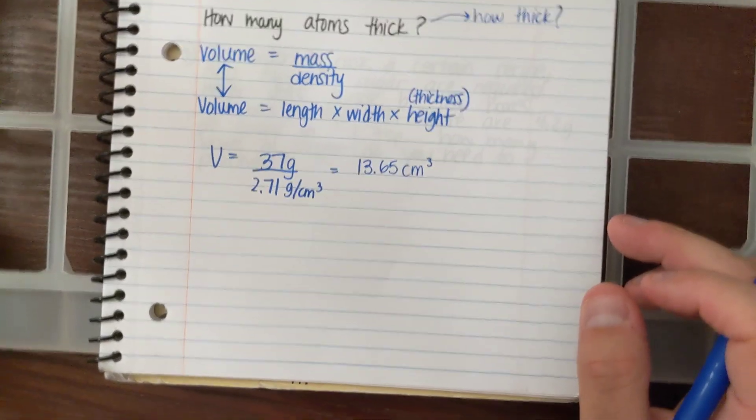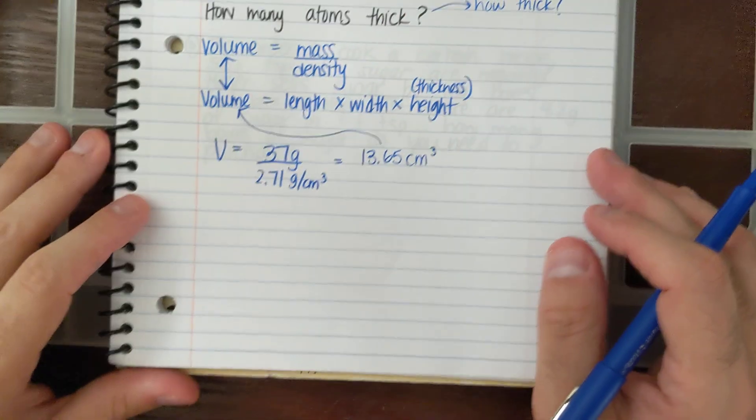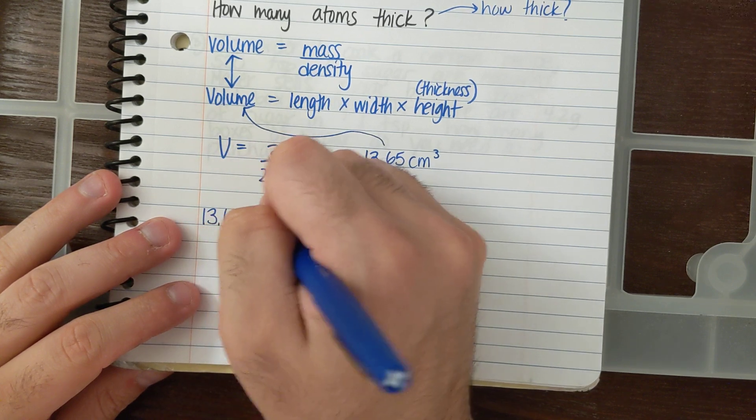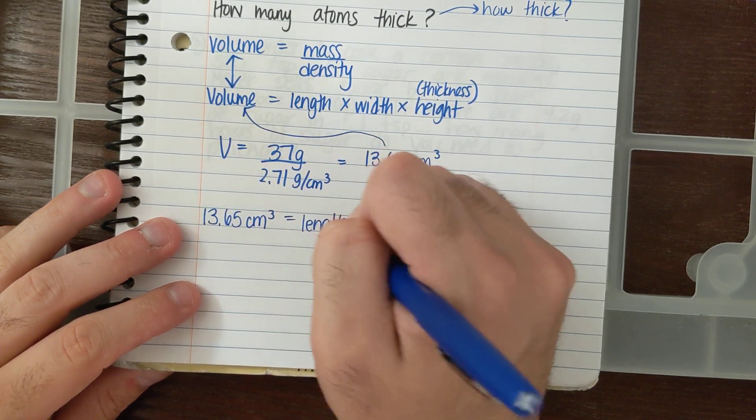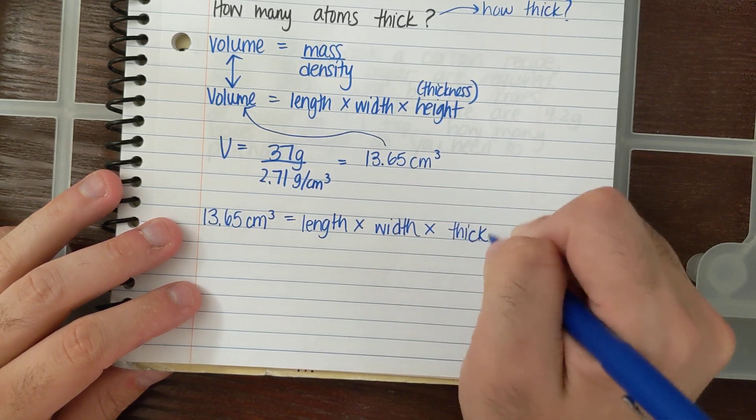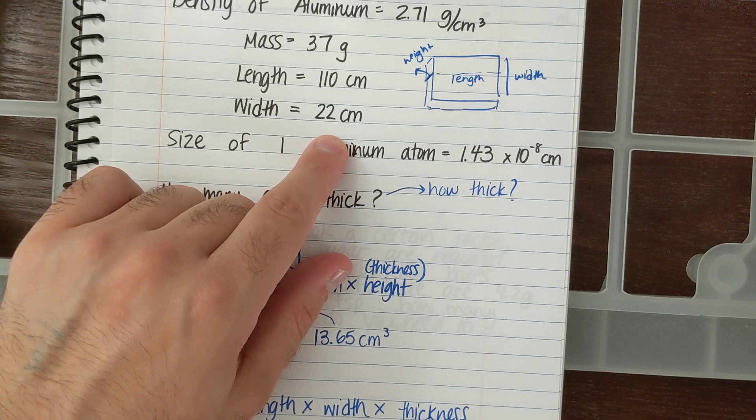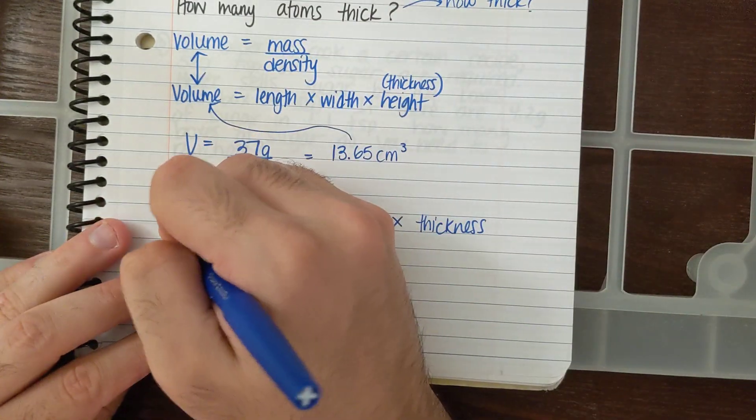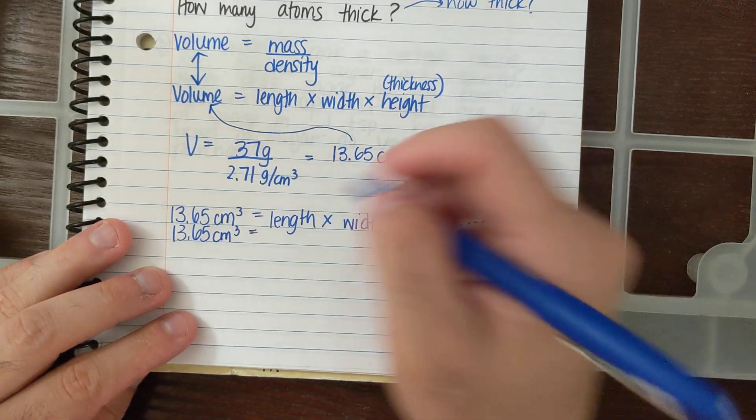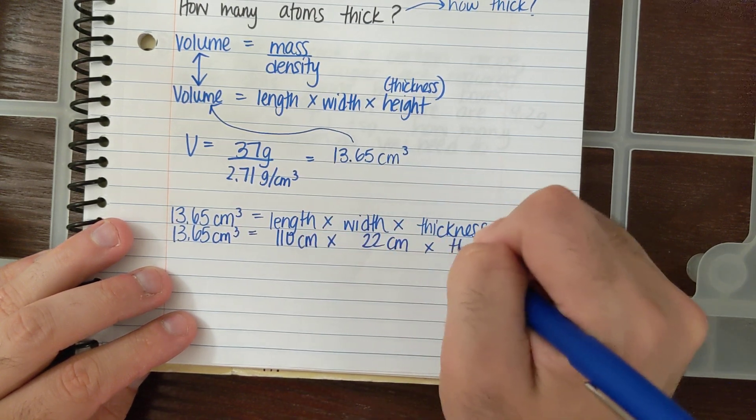If that's my volume, I know that I could plug this volume into length times width times thickness. So 13.65 centimeters cubed is equal to length times width times thickness. Let me plug in my length and width. My length was 110 centimeters and my width was 22 centimeters. 13.65 centimeters cubed is equal to 110 centimeters times 22 centimeters times thickness.